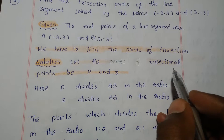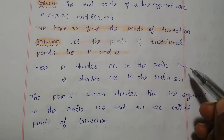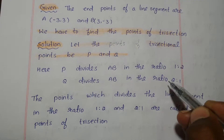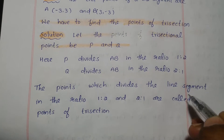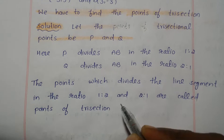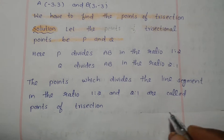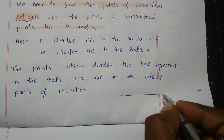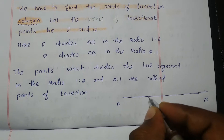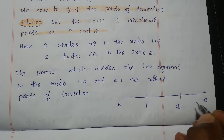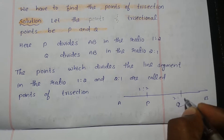Let the trisection points be P and Q. P divides AB in the ratio 1:2, and Q divides AB in the ratio 2:1. The points which divide a line segment in the ratio 1:2 and 2:1 are called points of trisection. For example, on line segment AB, P and Q are two points such that P divides in the ratio 1:2 and Q divides in the ratio 2:1.